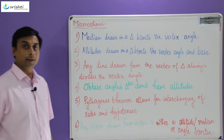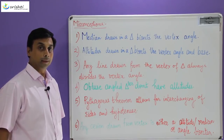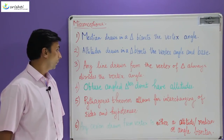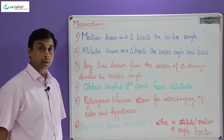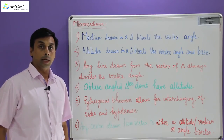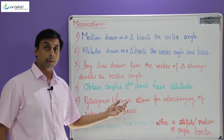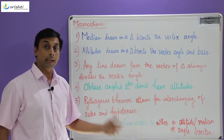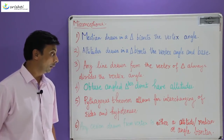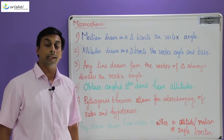So here is a list of six misconceptions related to triangles. The first one is median drawn in a triangle bisects the vertex angle. The second misconception is altitudes drawn in a triangle bisect the vertex angle and the base. The third one: any line drawn from the vertex of a triangle always divides the vertex angle into two equal parts. The fourth one: obtuse angle triangles don't have altitudes. The fifth one says Pythagoras theorem allows for interchanging of the sides and hypotenuse. And the last one is any cevian drawn from a vertex has to be one of the three — it's either an altitude, a median, or an angle bisector.